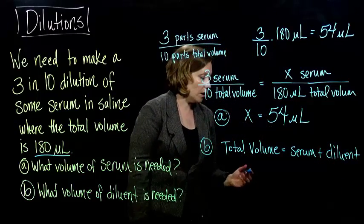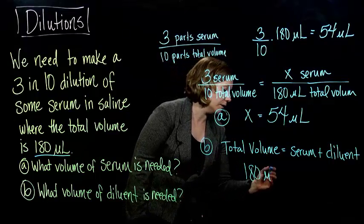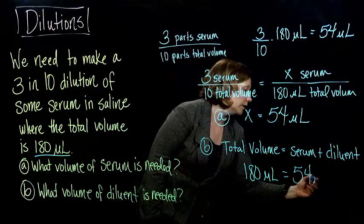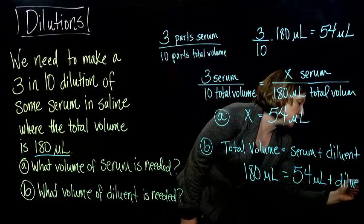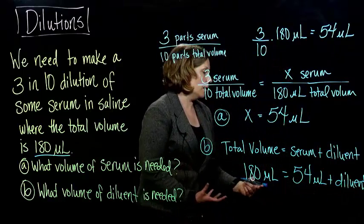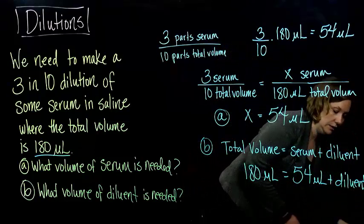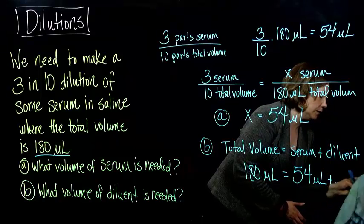Okay, so the total volume is going to be, they told us, it's 180 microliters equals 54 microliters plus the volume of the diluent, which is what we don't know. You could call this a variable if you like. We could call it, I like y, so let's call it y.